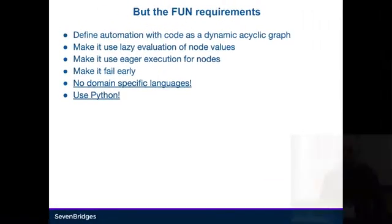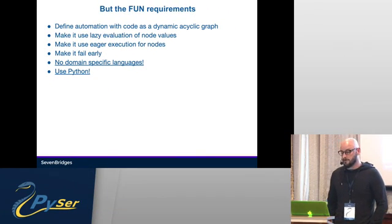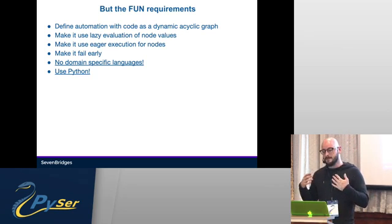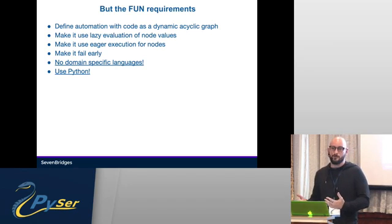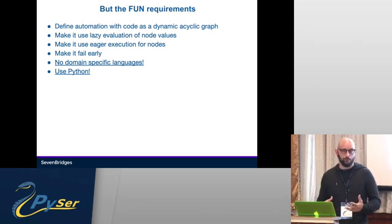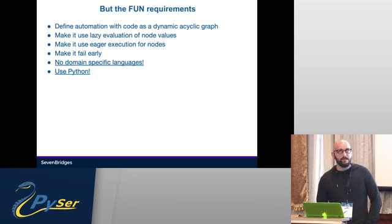But then we came to the fun requirements — the more specific ones which didn't fall under the category of 'yeah, we know how we're going to do this.' Some of those were: to define automation with code that defines a dynamic acyclic graph, to make it use lazy evaluation of node values in that graph, and to eagerly execute the nodes. It should also fail early, it shouldn't be a domain-specific language developed additionally, and it should be written using Python.